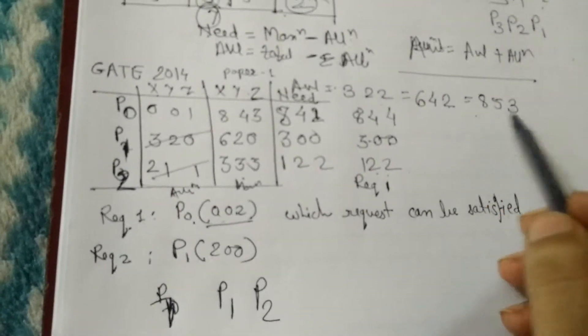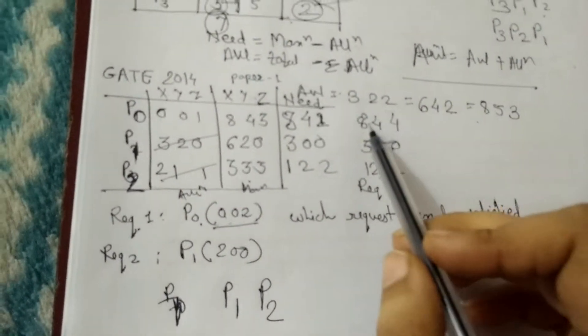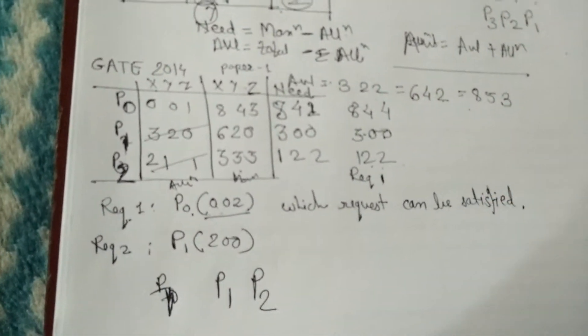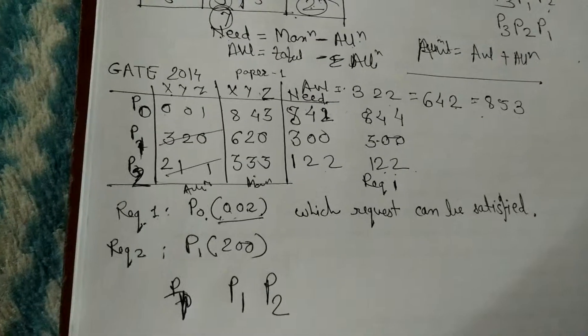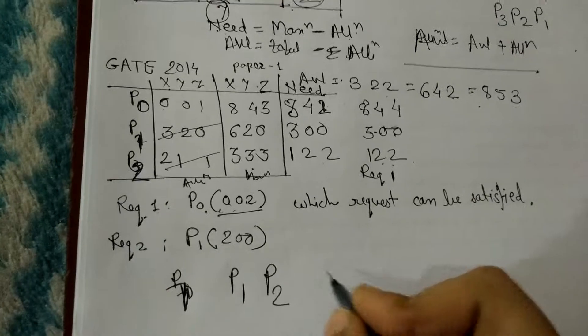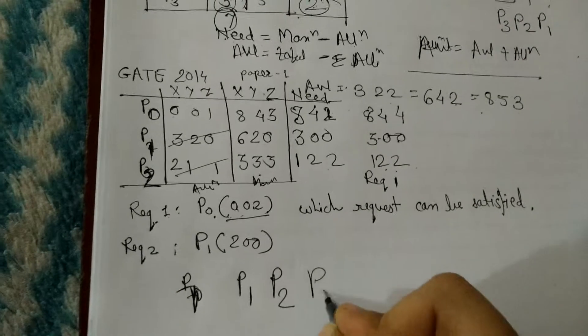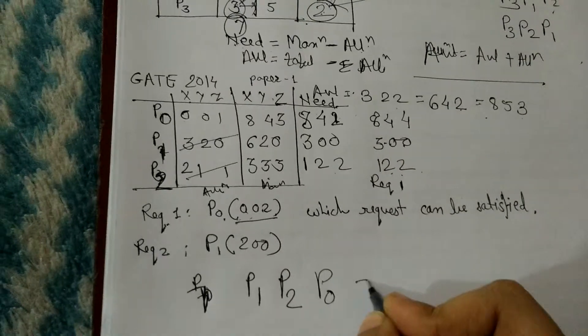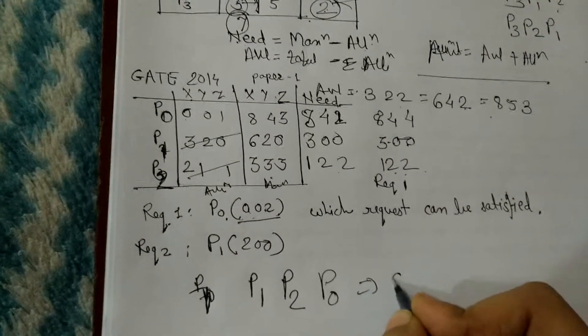By using the available resources (853), I can satisfy the need of P0, so the sequence P1, P2, P0 is in a safe state.